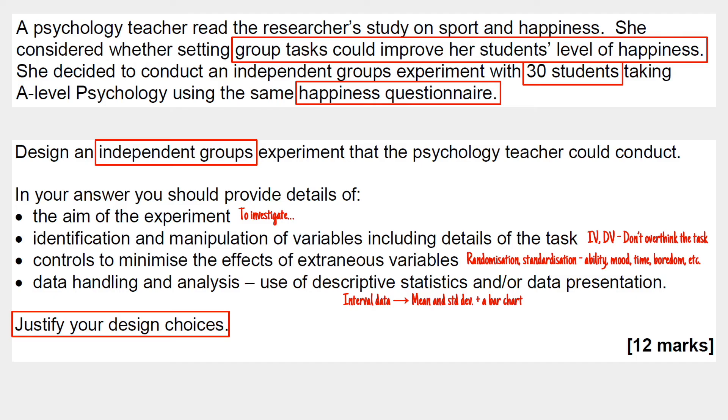I'm going to go through a possible answer bullet point by bullet point and address all the important bits after each section. The first bullet point is a nice, simple, easy one: write an aim — it's only a sentence. I've highlighted that crucial phrasing, and that should be everything that you need for this first bullet point.